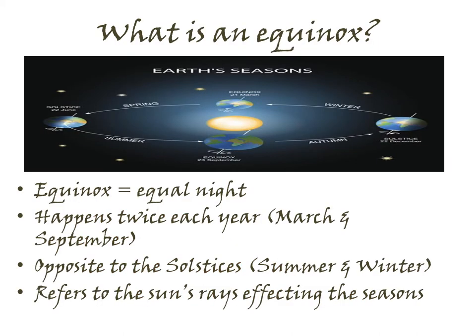The first question we ask is: what is an equinox? The term equinox comes from the Latin, and it means equal night. It happens twice each year — once in March, and once in September. It is in opposition to the solstices, which are equal days — the opposite.